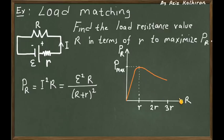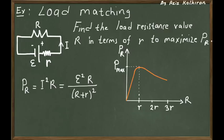This numerical analysis gives you a curve. The horizontal axis is R, the load resistance, and there is clearly some value of R that makes P maximum. That point corresponds to the load resistance being equal to the internal resistance of the battery. Whenever the load resistance equals the internal resistance, you get maximum power output — this is important for designing electrical circuits when maximum power output is required.